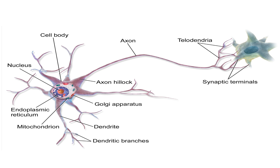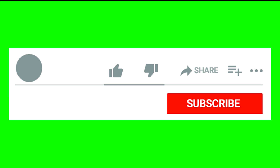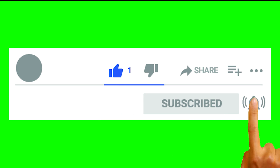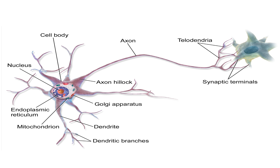You can compare the impulse with the current in your normal household wires. Unlike other body cells, neurons never regenerate. They only divide and regenerate in the mother's womb, where they become mature, and never regenerate or divide after that.